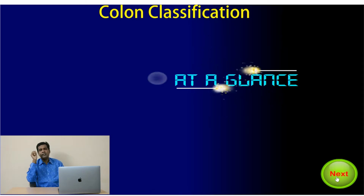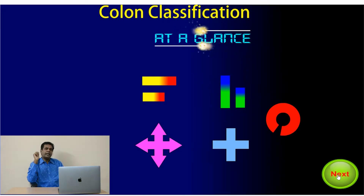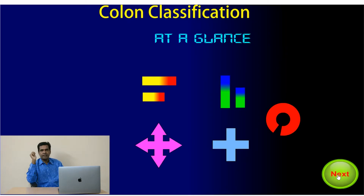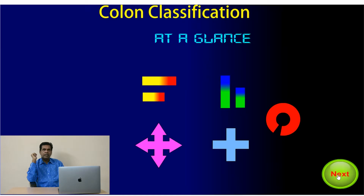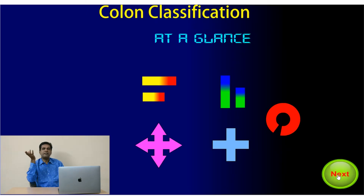Ranganathan received an idea from the mechanoset. The mechanoset apparatus concept was used by Ranganathan in Colon Classification Scheme. The mechanoset includes different parts which can be interconnected, and in the final result you can get a new form — that is the concept of the mechanoset. Kids are very much interested in playing with the mechanoset, which you can find at home.